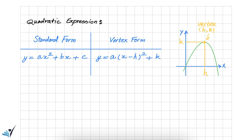In the previous video, we talked about the standard form of the quadratic expression, which you can see on the left side of the screen. In the standard form, A, B, and C are the constants of the expression and X is the variable. In this video, we wanted to talk about another form of the quadratic expression, which is called the vertex form. You can see the vertex form on the right side of the table. The reason we're interested in the vertex form is because the coordinates of the vertex of the parabola are readily available from it.